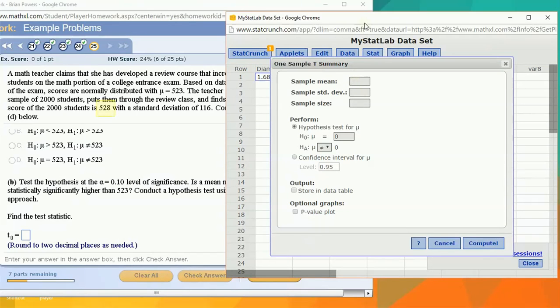The sample mean was 528 as stated in the problem, the sample standard deviation of 116, the sample size of 2000. The null hypothesis was that the μ was equal to 523, and the alternative is that it increased from 523. And let's compute.